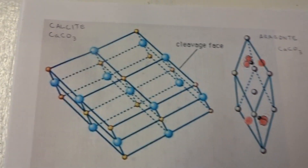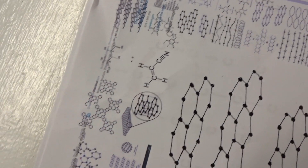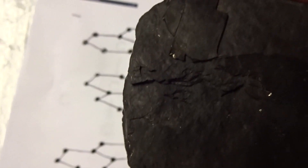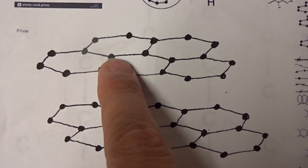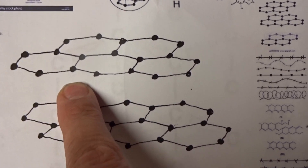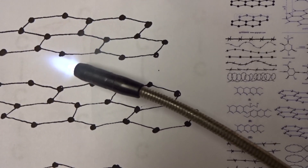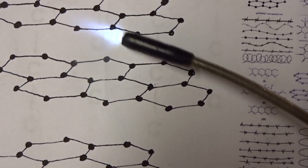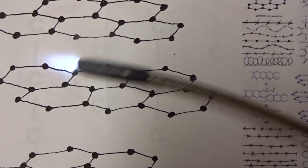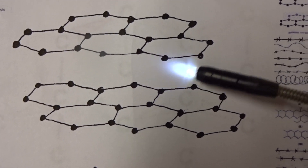Heat and/or pressure causes the molecules to take on a different shape. For example, here's graphite found in coal — notice the hexagonal rings attached. Each circle represents a carbon atom, and they form sheets — many, many sheets. So they're slippery; they slide along the planes, and we use them in pencils as graphite.